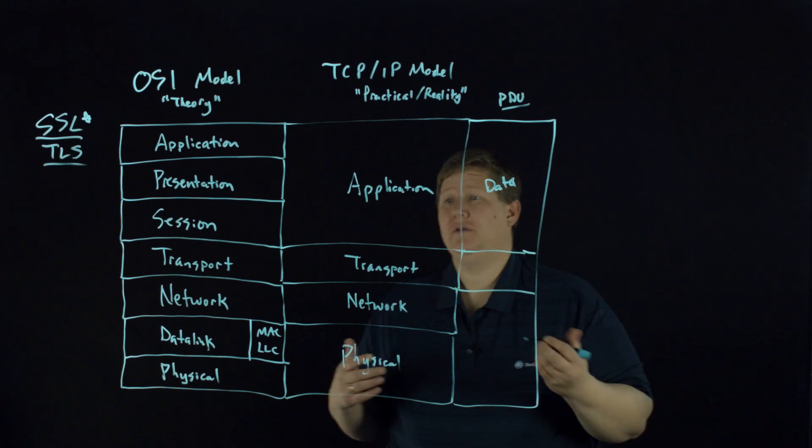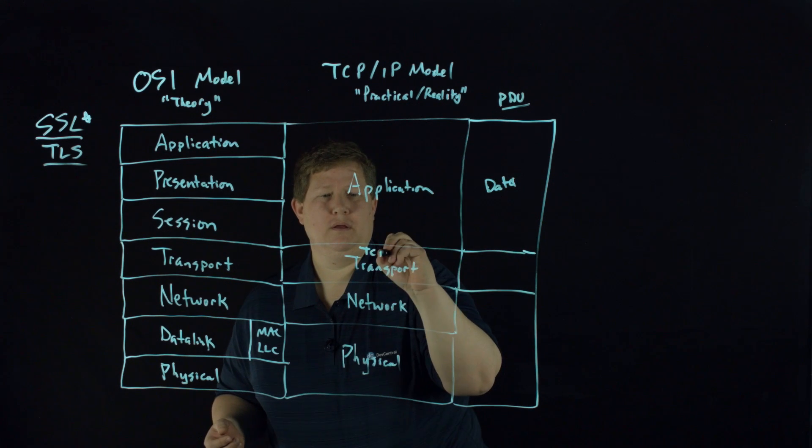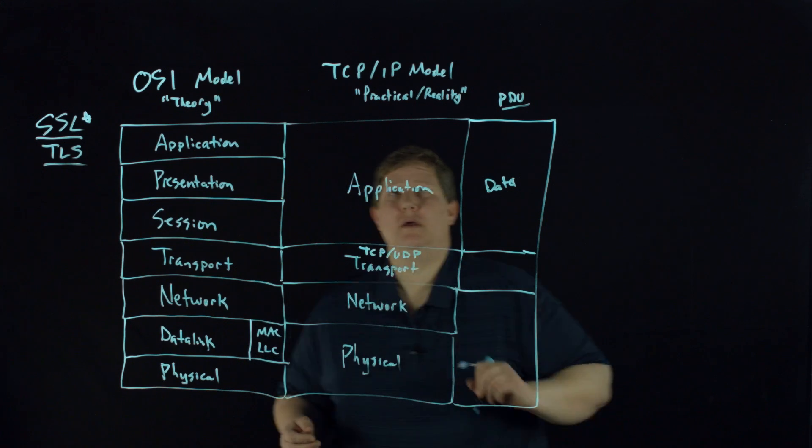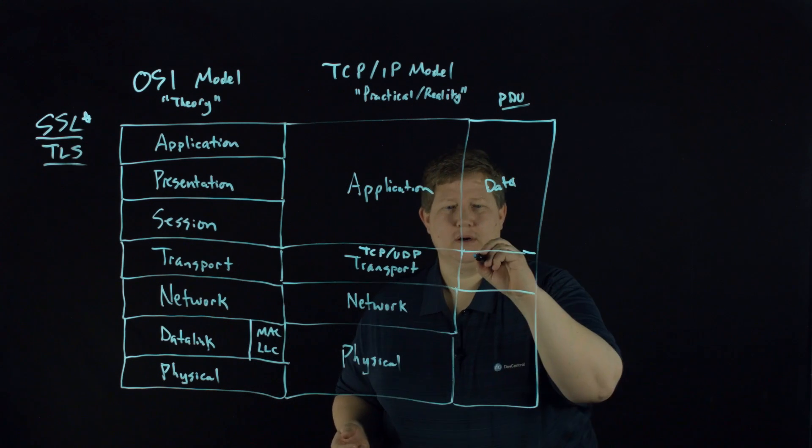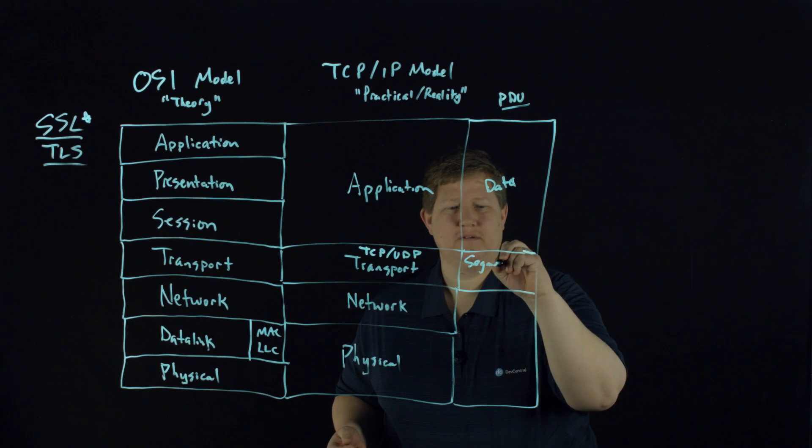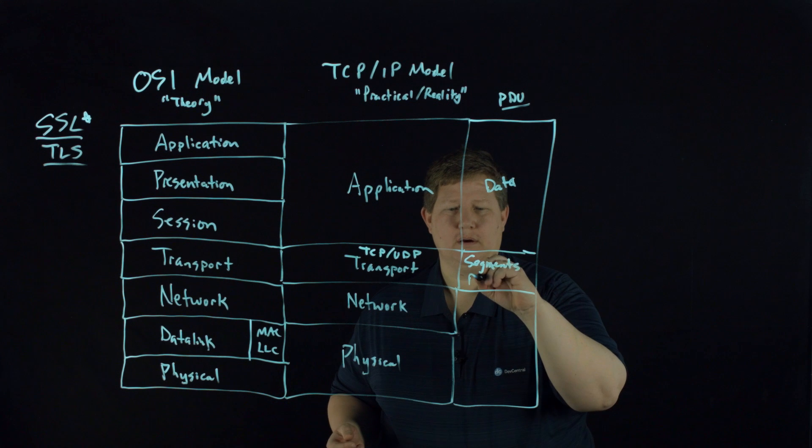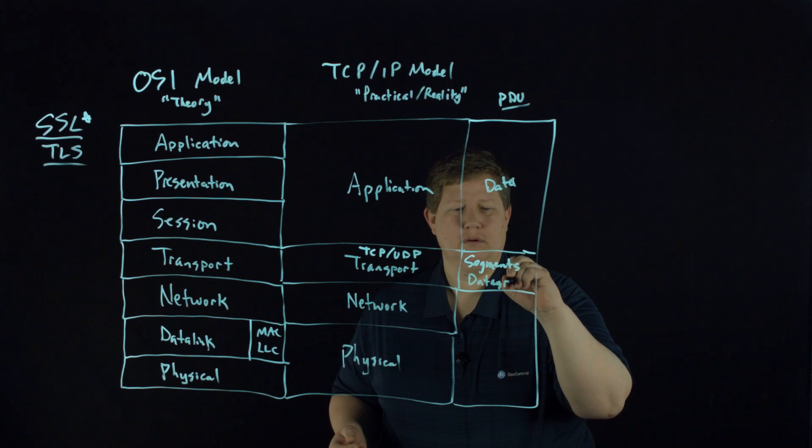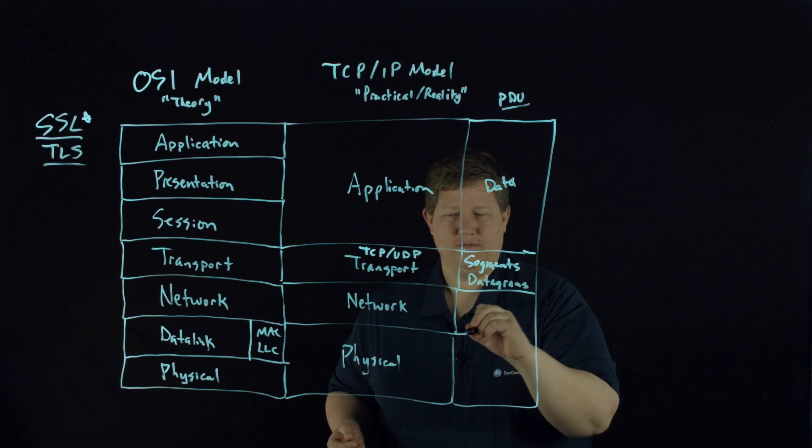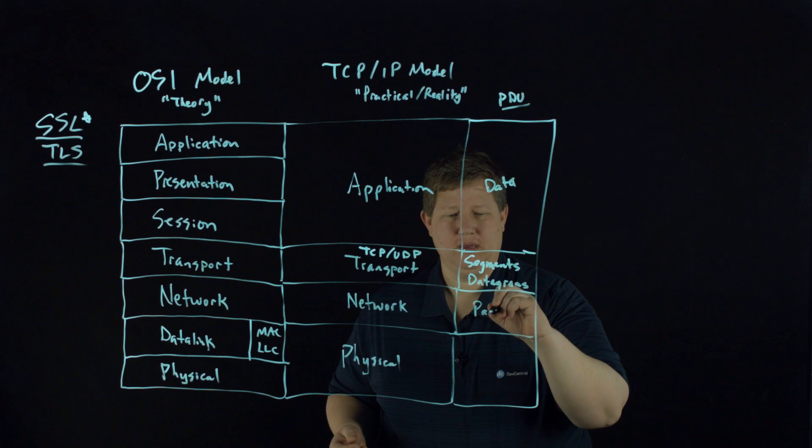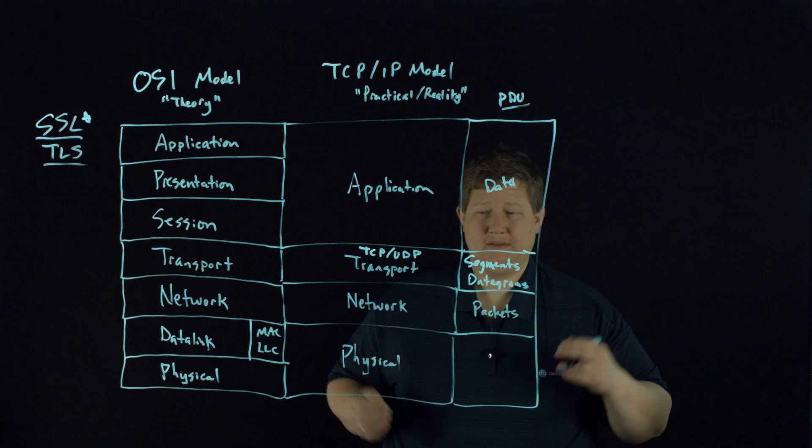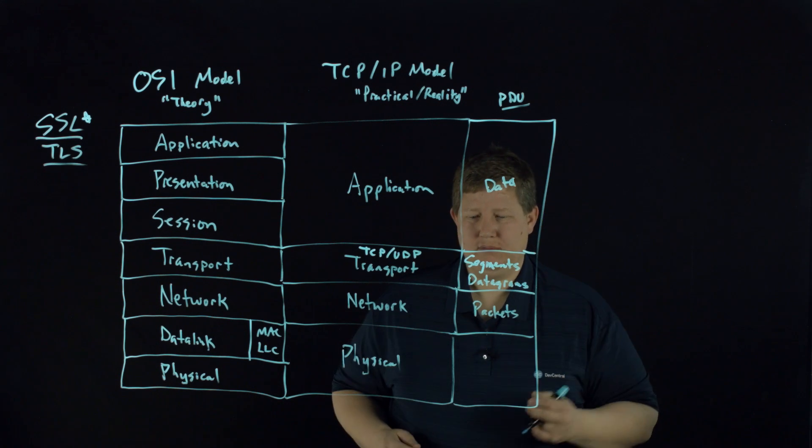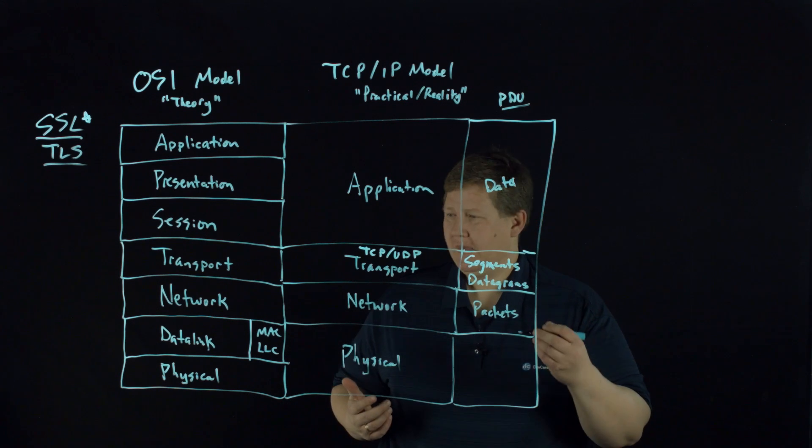Here at the transport layer, you have TCP and UDP are the very common layer four. RTSP is another one. For TCP segments, and for UDP, they're datagrams. And then of course, at the network layer for IP, we have packets. And of course, there's other things out there for network besides the IP.